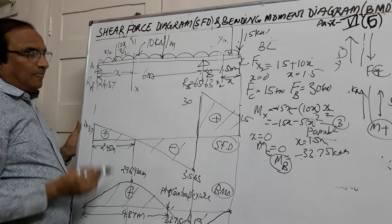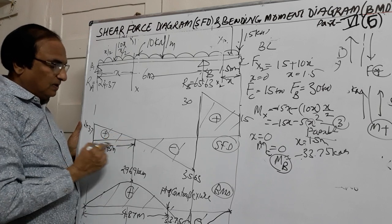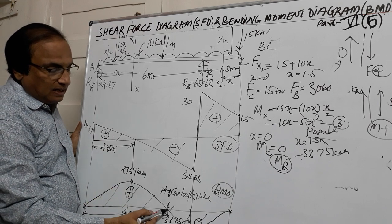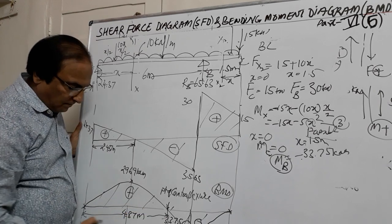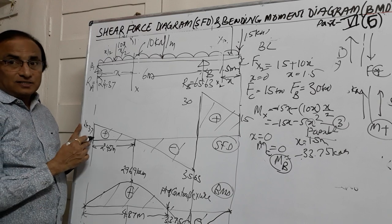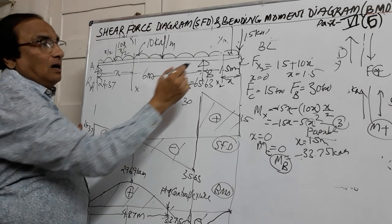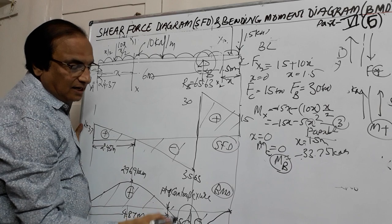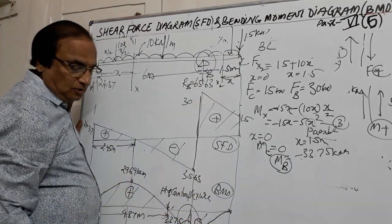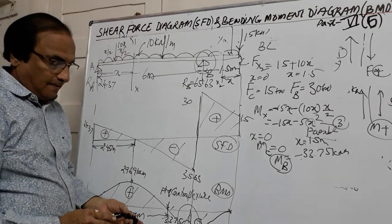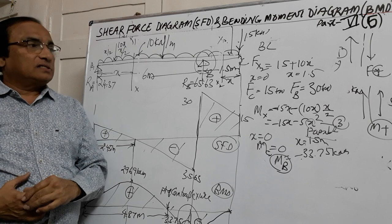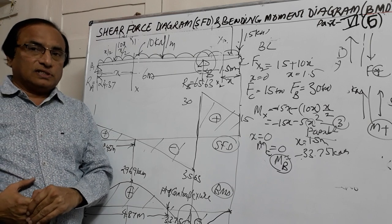Key salient points to remember: Whenever shear force changes from positive to negative, find the point where SF = 0 — that is where bending moment is maximum. If the bending moment curve passes from positive to negative, locate the point of contraflexure where moment is zero. At a simple support, moment is zero and shear force is maximum. Where shear force is zero, bending moment is maximum. At the overhanging part, you get negative hogging bending moment. At the free end of a cantilever beam, bending moment is zero. We will take up another problem in the next video — please subscribe, press the bell icon, and comment your questions. Thank you.